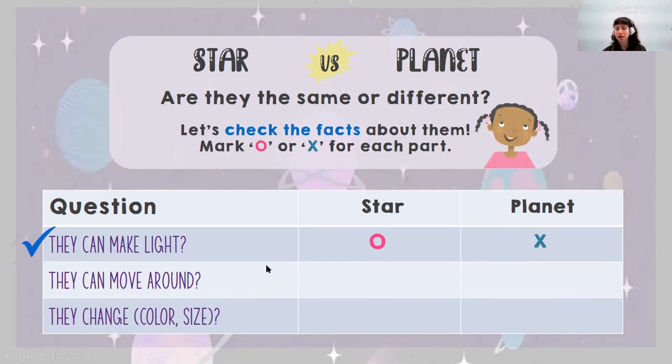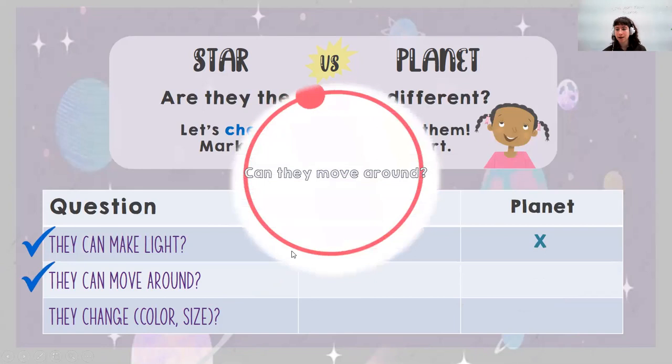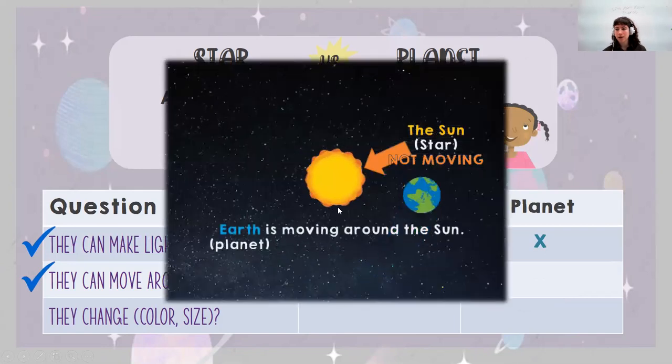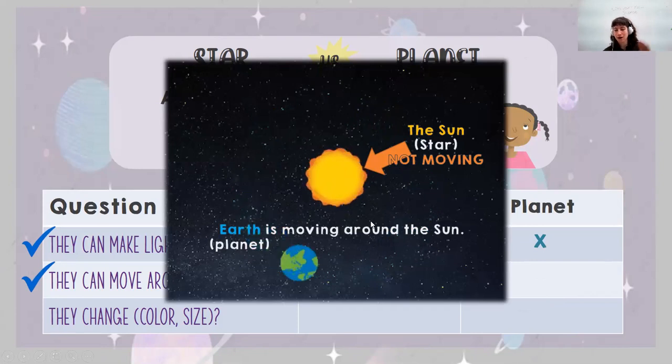And what about stars and planets, can they move around? Let's see. The sun, which is a star, is not moving. And the earth is moving around the sun, and the earth is a planet. So star no and planet yes.